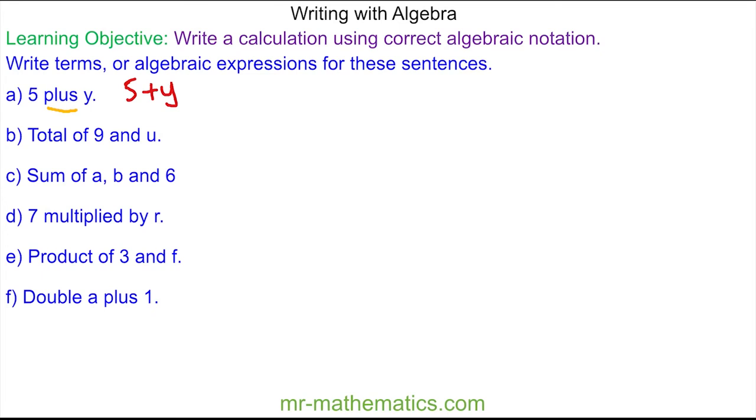This would be the algebraic expression for question a. For question b, the keyword now is total, and total means plus, so it is the total of 9 and u, which is 9 add u.